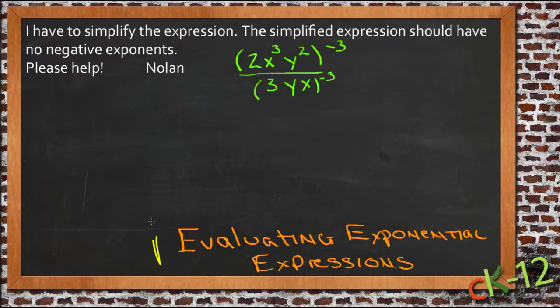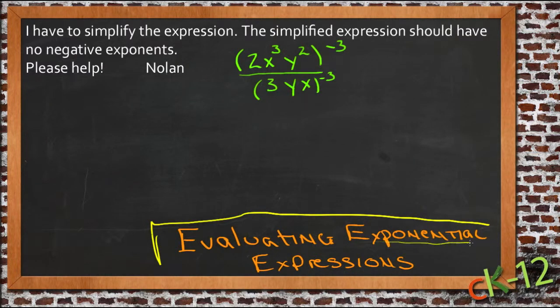So this lesson is evaluating exponential expressions, which really means we're going to take expressions that have exponents in them and we're going to simplify them. That really is what evaluating generally ends up meaning. Sometimes it means you put a value in for one variable and figure out what the numerical value of the whole thing is, but generally it just means you simplify. So that's what Nolan needs to do here.